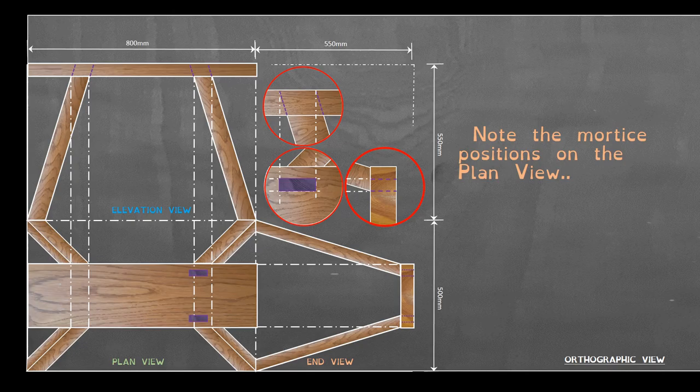So here we have the plan view showing those 4 mortises coming through the top of the sawstool.